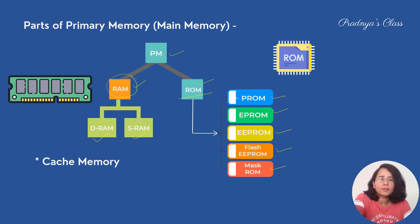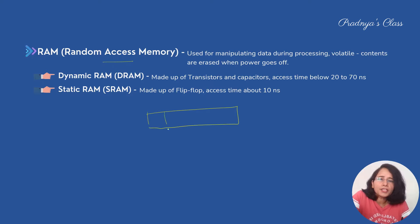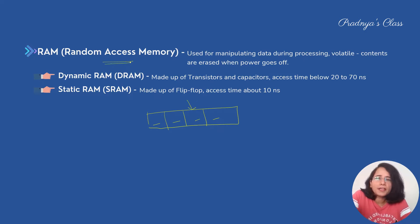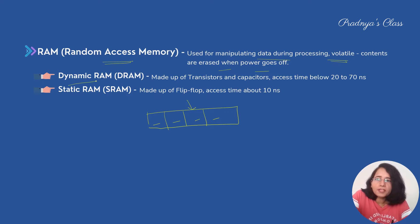The first type is Random Access Memory. Memory is divided into partitions and we can access any location randomly — that's why it is known as random access memory. It is used for manipulating data during processing, but it is volatile. Volatile means the contents are erased when the power goes off — it is a temporary storage. RAM is further divided into Dynamic RAM and Static RAM.